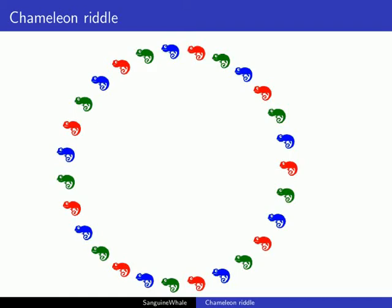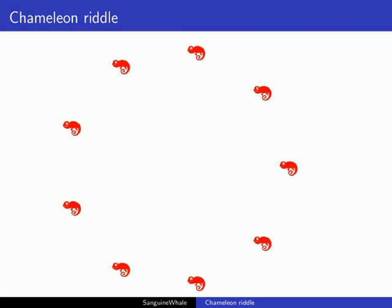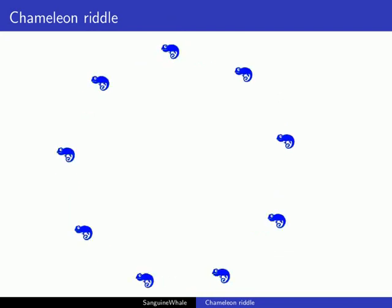Imagine 243 chameleons are sitting in a circle. A chameleon can be red, green, or blue.